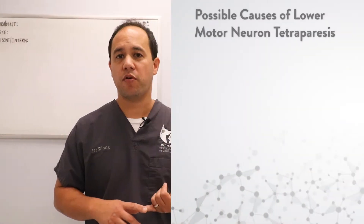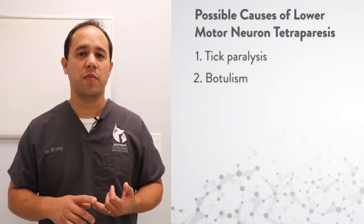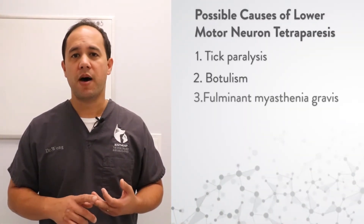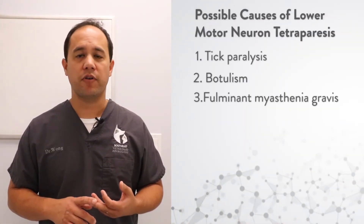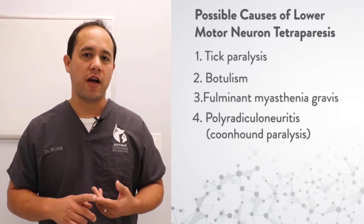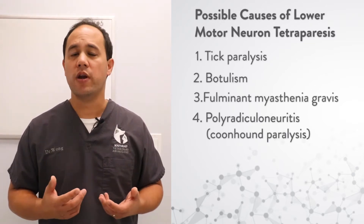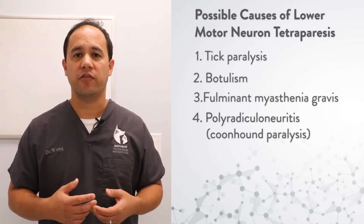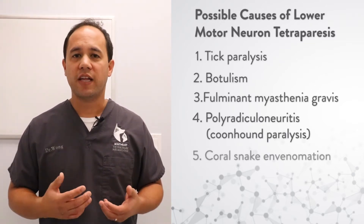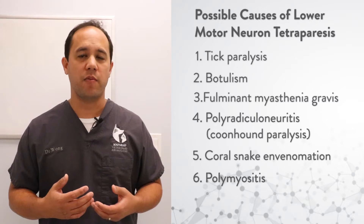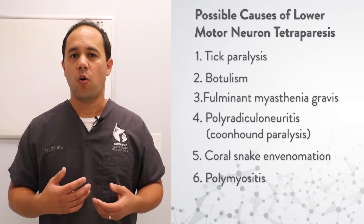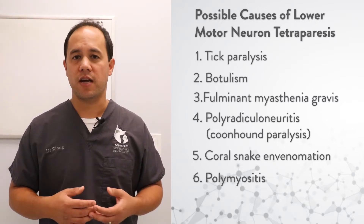Our list of possible causes for lower motor neuron tetraparesis includes tick paralysis, botulism, fulminant myasthenia gravis, polyradiculoneuritis (what we call coonhound paralysis), and less commonly, coral snake envenomation or polymyositis.